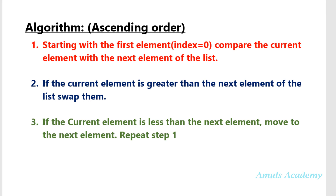Before writing the program, first we will see the algorithm. We are writing the program for ascending order, so this is the algorithm for that. First step: starting with the first element, compare the current element with the next element of the list. If the current element is greater than the next element, swap them. If not, move to the next element and repeat step 1. This is the algorithm for ascending order.